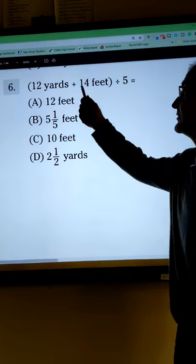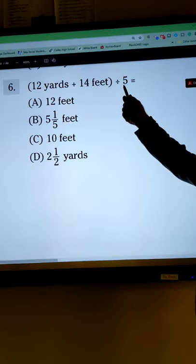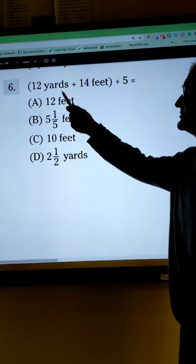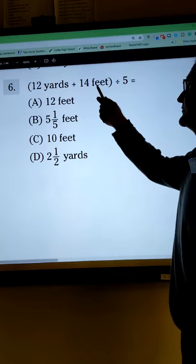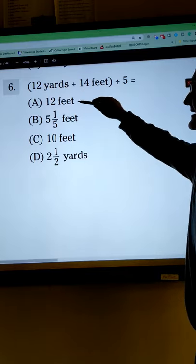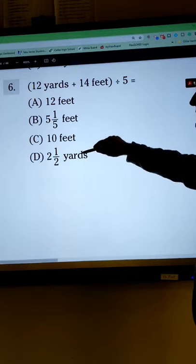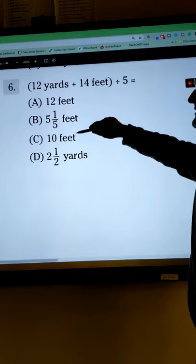So getting started, I have 12 yards plus 14 feet divided by 5. It's going to be a unit conversion. I'm not sure whether I go to yards or feet, so I look at my answers and I can see three of the answers are in feet, one in yards, so most likely I'm going to go to feet.